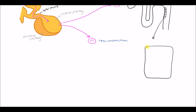Within this principal cell, on one side is the lumen where urine is going, and on the other side is the blood. Anything that crosses into the blood side is considered reabsorbed; everything that stays on the lumen side goes into the urine.